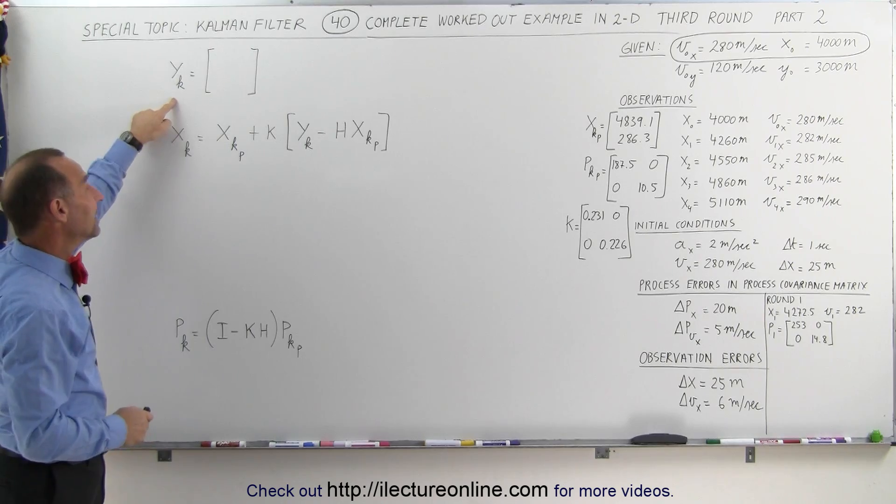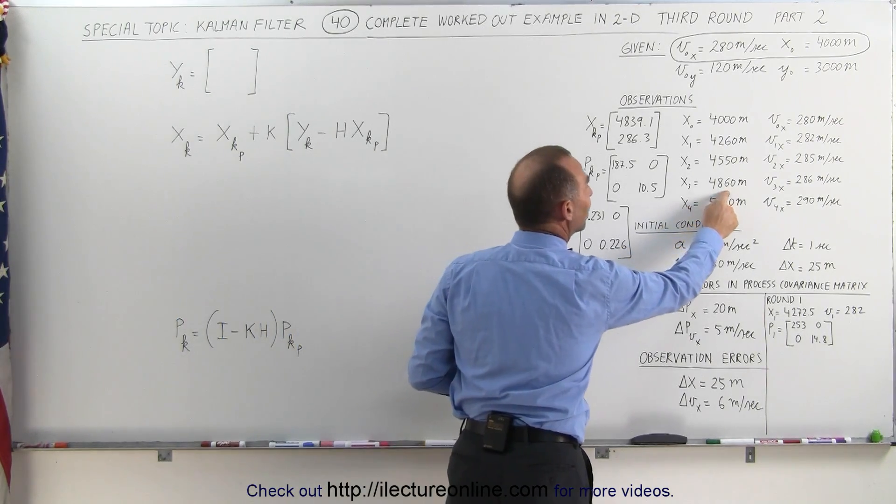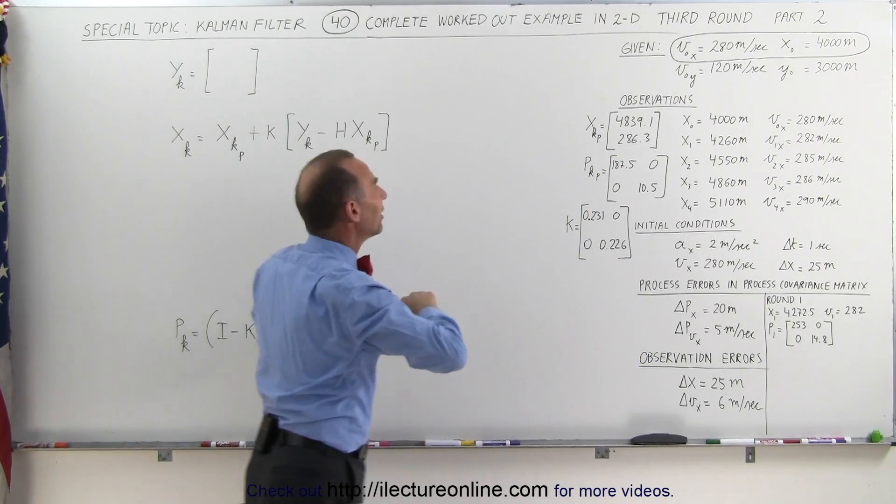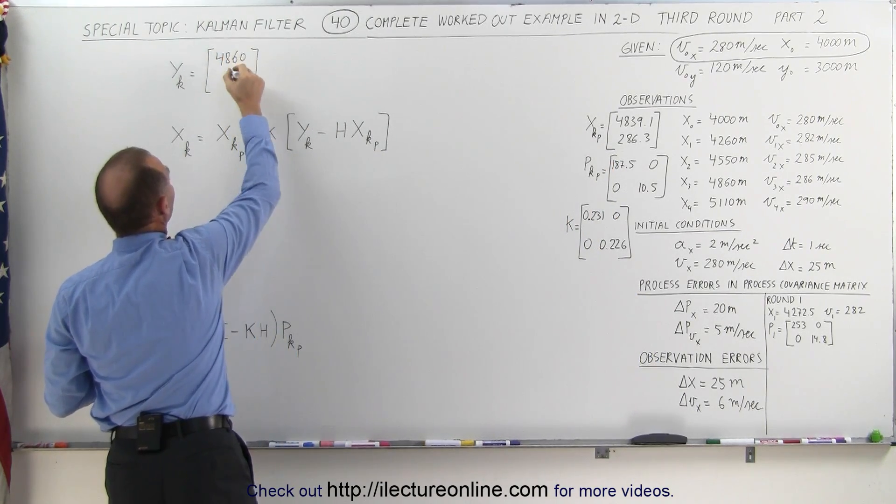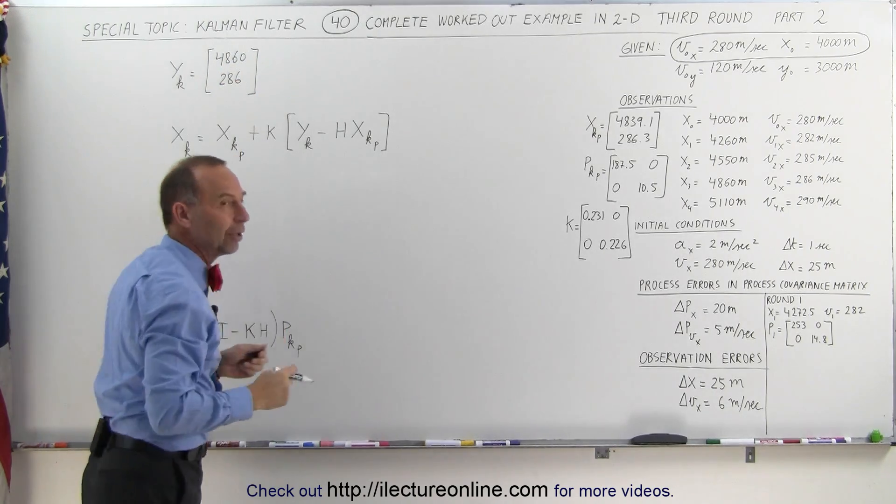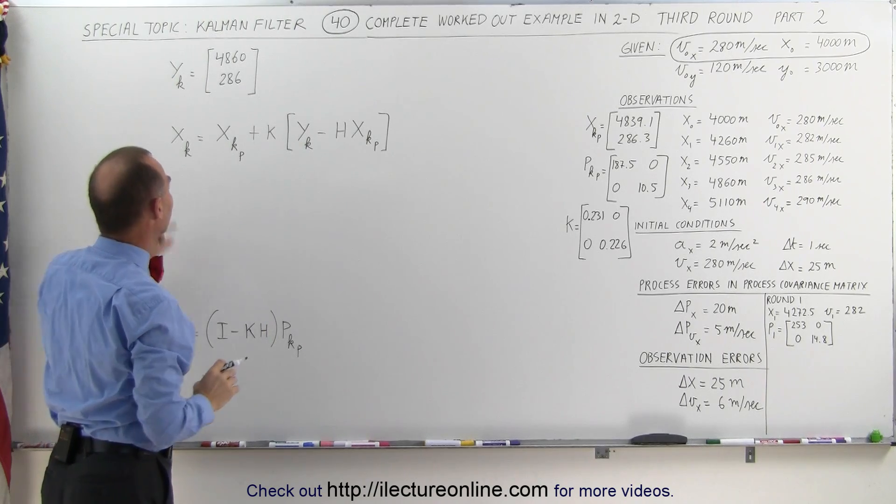First we need to bring in the measurements, the measured values for round three. Position 4860, velocity 286. Let's put that down here: 4860 and 286. We do not have to convert; that is already in the correct format. Normally we'll convert it, but we don't need to do that here.